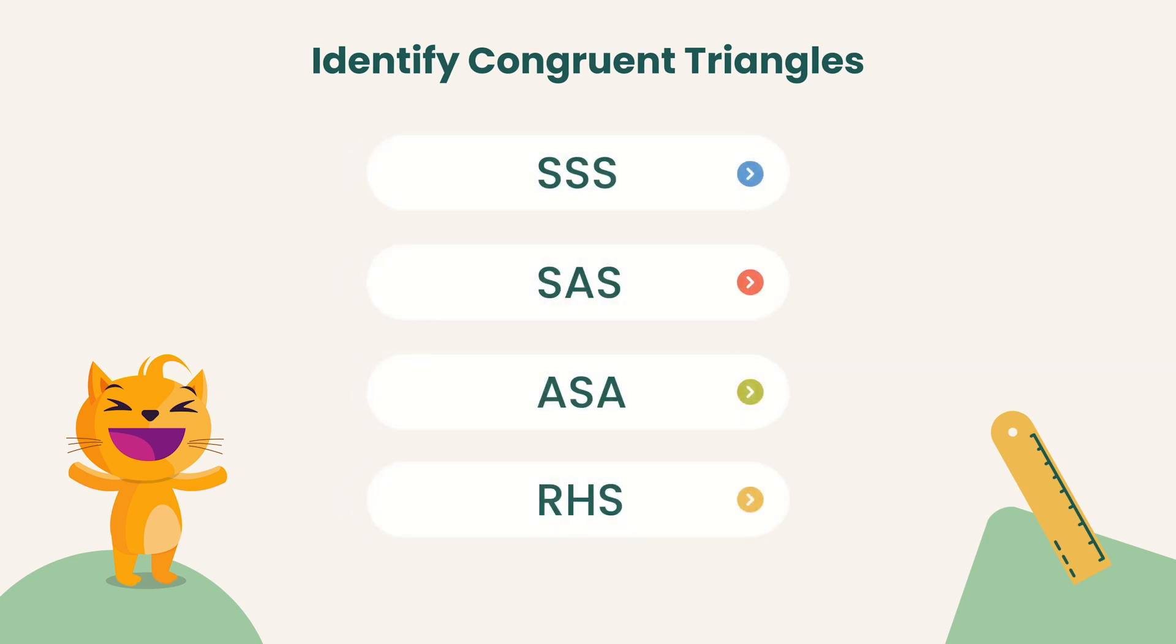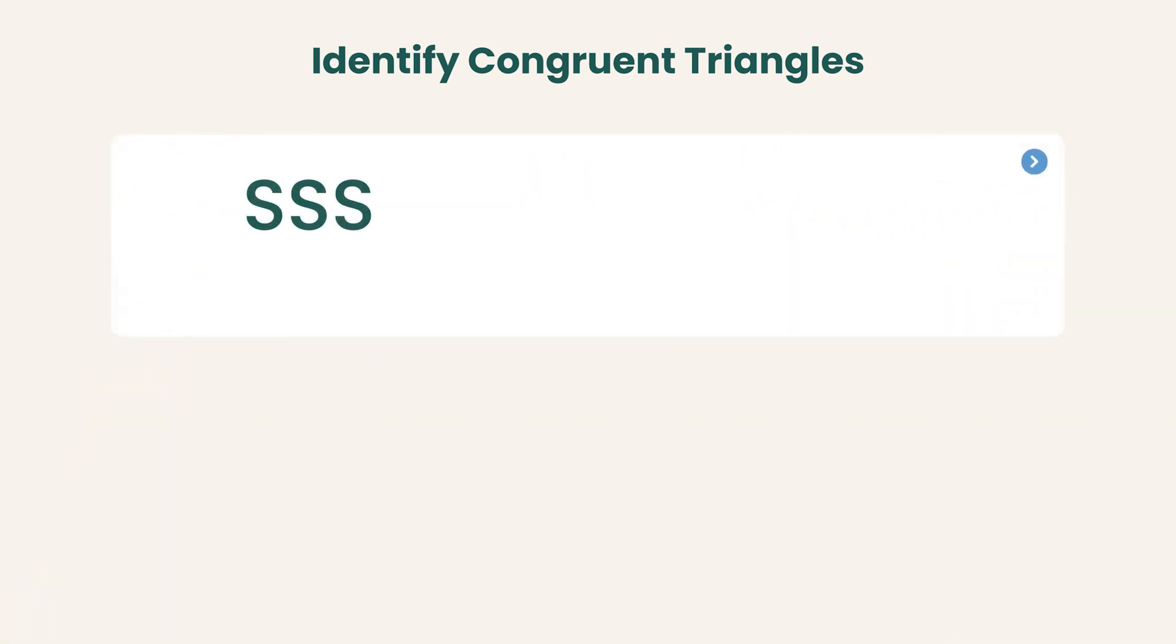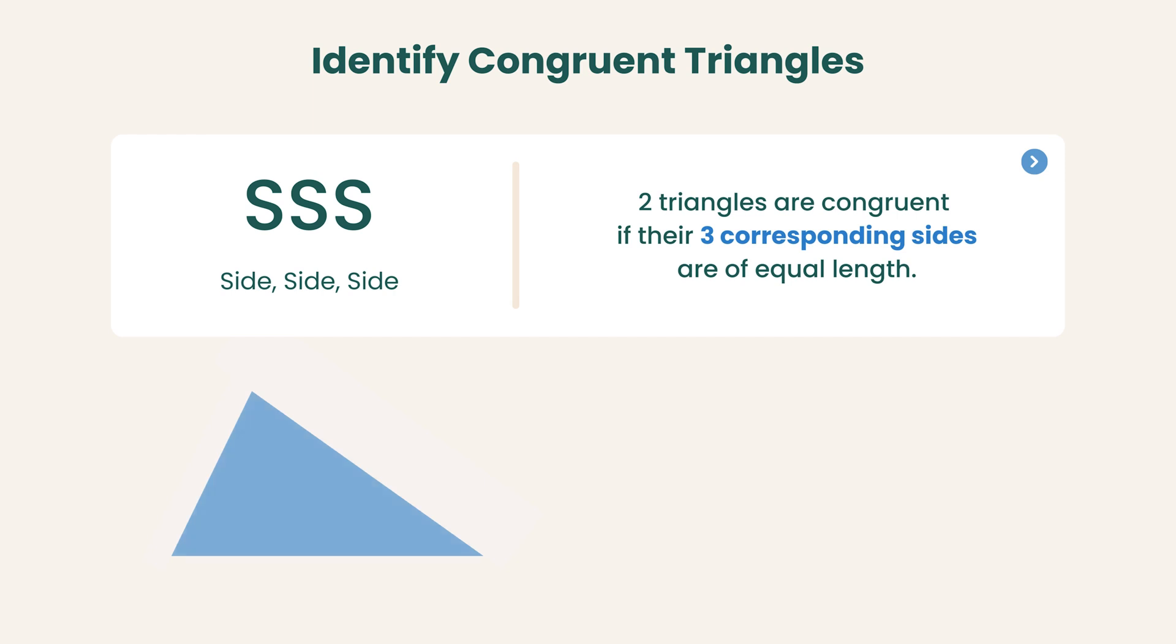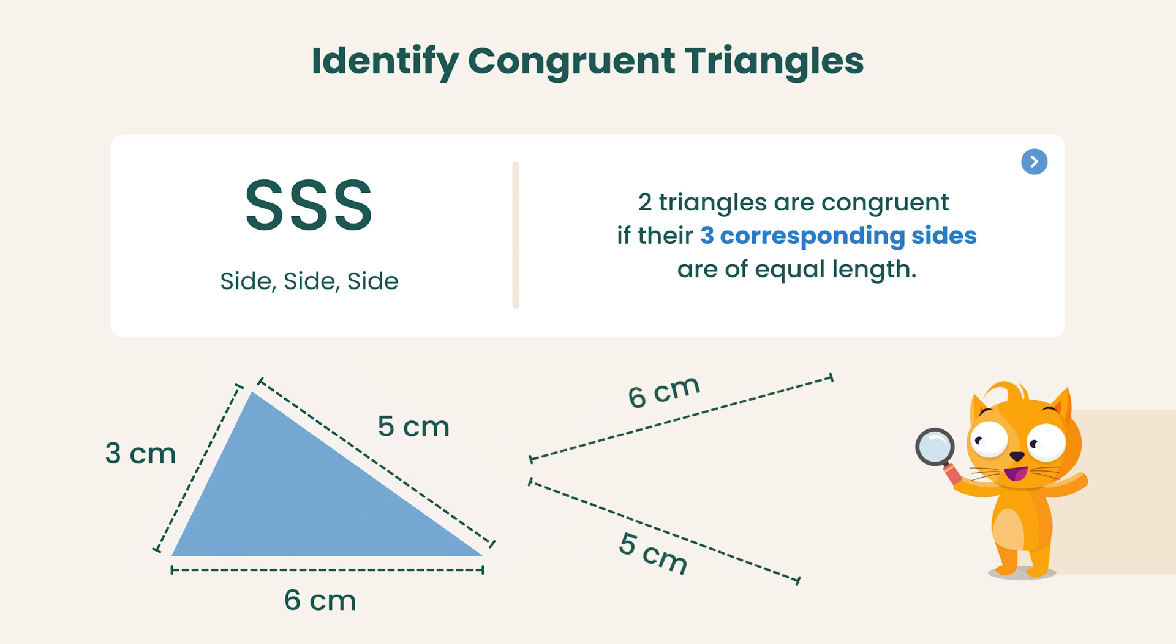There are four primary ways to tell whether two triangles are congruent. First, SSS, side-side-side. Two triangles are congruent if their three corresponding sides are of equal length. This is because there is only one way to construct a triangle with three given side lengths.